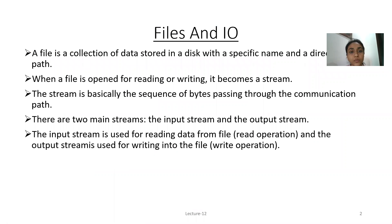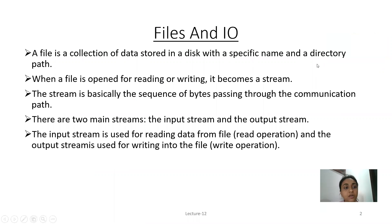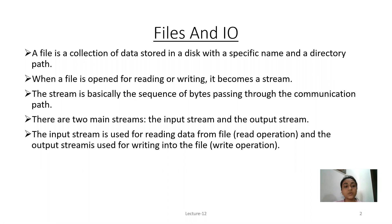What is file and IO? A file is a collection of data stored in a disk with a specific name and a directory path. When a file is opened for reading or writing, it becomes a stream. The stream is basically the sequence of bytes passing through the communication path. There are two main streams: the input stream and the output stream. The input stream is used for reading the data from a file, and the output stream is used for writing the data into the file.